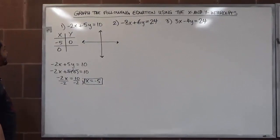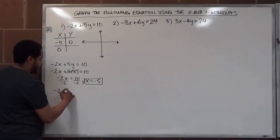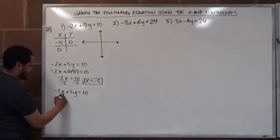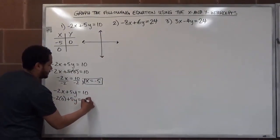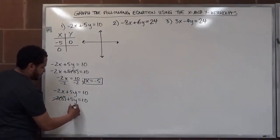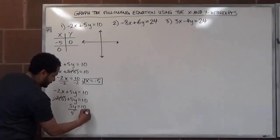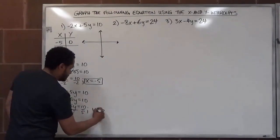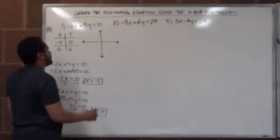So our x intercept is negative five, zero. Now we're going to do the same thing for our y intercept by substituting zero for x. We have negative two x plus five y equals ten, and x is zero. So it's negative two times zero plus five y equals ten. Anything times zero is zero, so we're left with five y equals ten. Dividing both sides by five gives us y equals two.